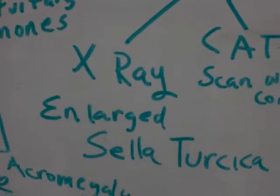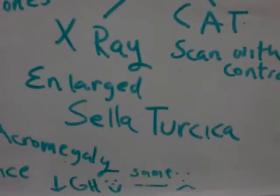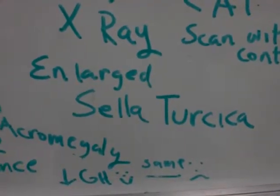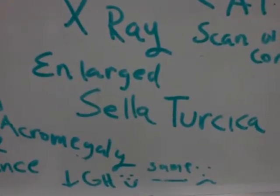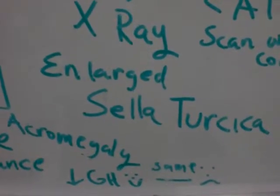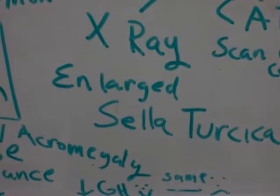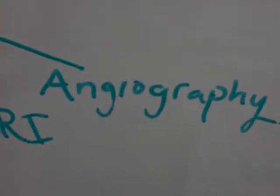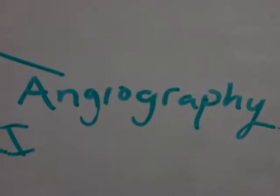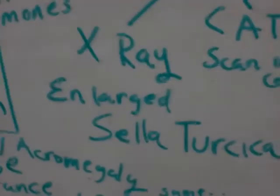We also have x-rays. A routine x-ray should be able to determine that the patient has an enlarged sella turcica — that's a Turkish word for saddle, and it's the place where the pituitary gland sits. The sella turcica can be enlarged when they have hyperpituitarism. And angiography: in case the etiology of the problem is based on an aneurysm or arteriovenous problem, angiography should be able to reveal that. So in imaging radiographs we have x-ray, CAT scan, MRI, and angiography.